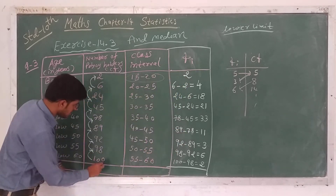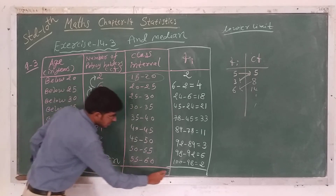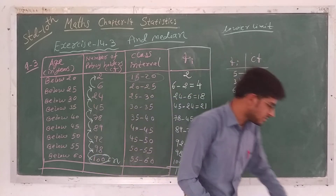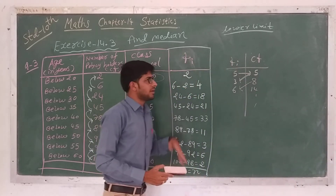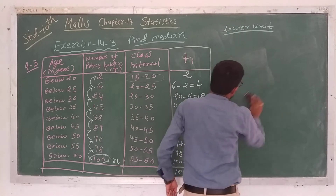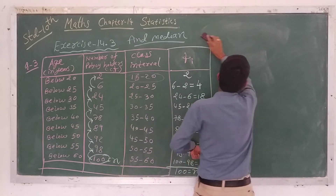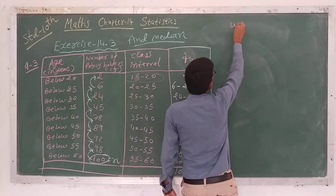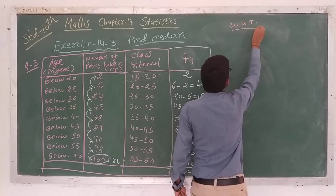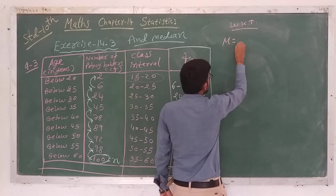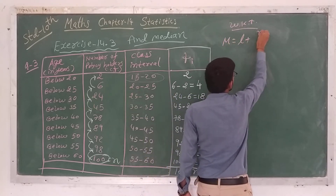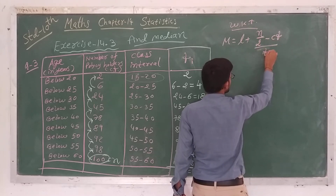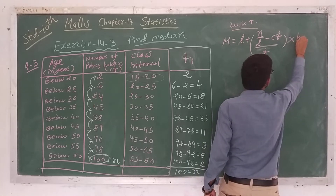The summation of all frequencies, sigma fi, gives 100, which equals n. So n is equal to 100. Now, the formula for finding the median in grouped data is: M equals l plus (n by 2 minus cf) divided by f, multiplied by h.